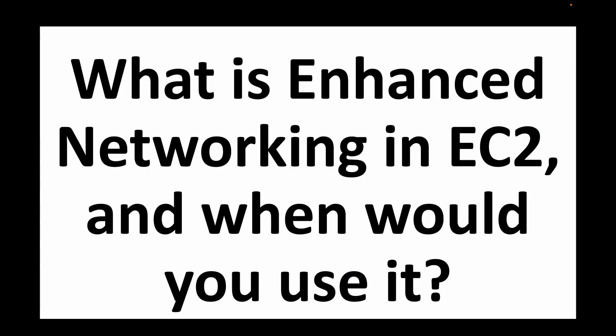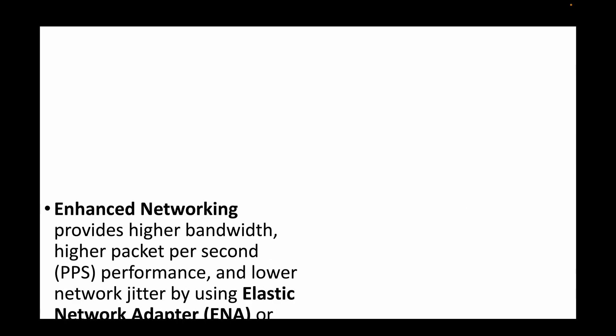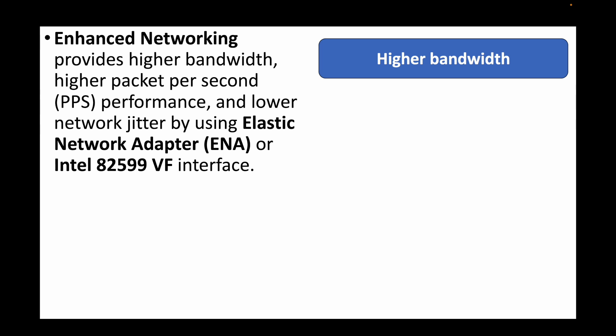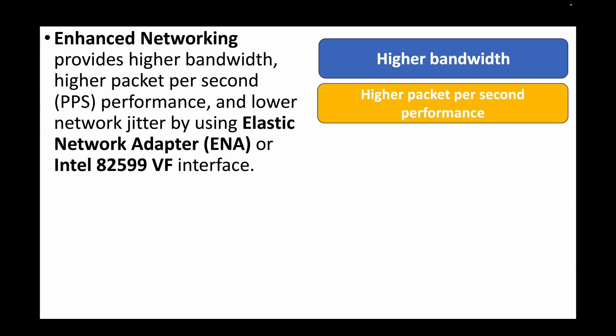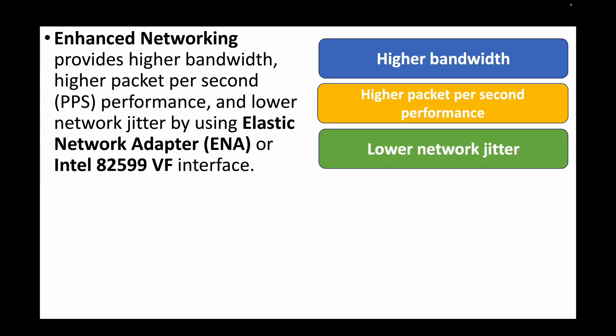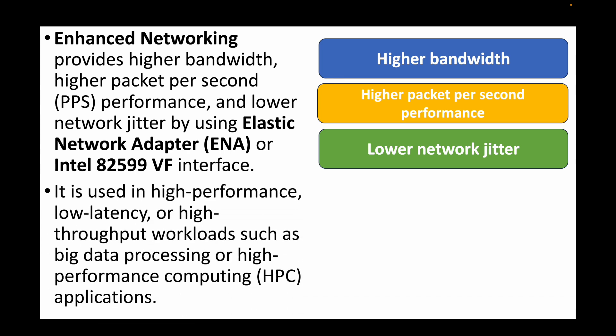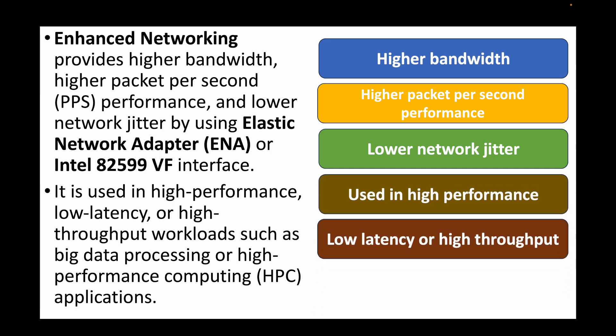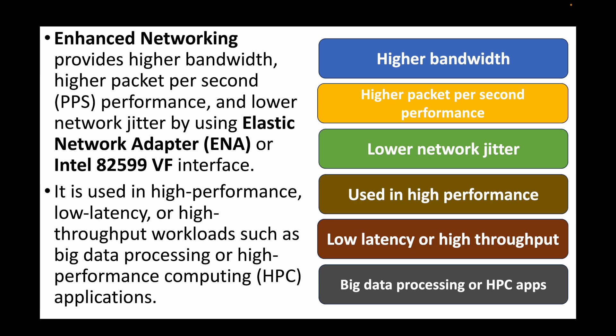The next question is: what is enhanced networking in EC2 and when would you use it? Enhanced networking can be used when you want higher bandwidth, higher packets-per-second performance, and lower network jitter. For this we can use the Elastic Network Adapter (ENA) or the Intel 82599 VF interface. This is used in high-performance, low-latency, and high-throughput workloads such as big data processing or high-performance computing applications where networking plays a major role in application performance.